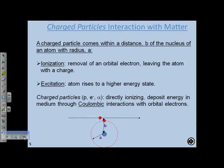Now we'll discuss how radiation interacts with matter. A charged particle travels within a distance B — the impact parameter — of the nucleus of an atom with radius A. Ionization is the removal of an orbital electron, leaving the atom with a net charge. Excitation occurs when the particle is too far away or lacks sufficient energy to ionize, but raises the electron from one sub-shell to another.